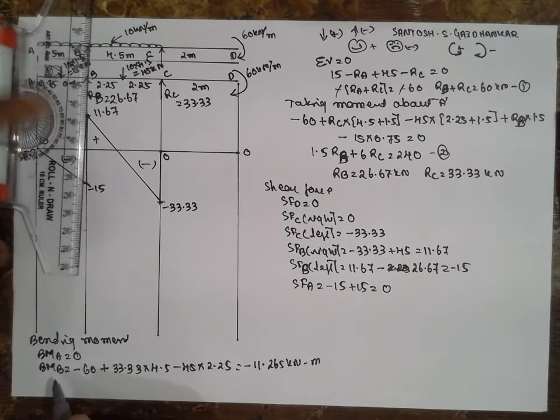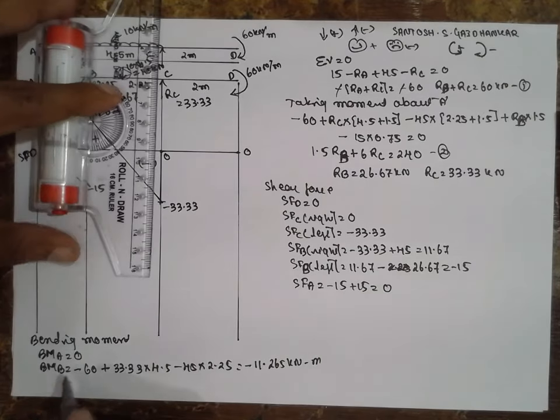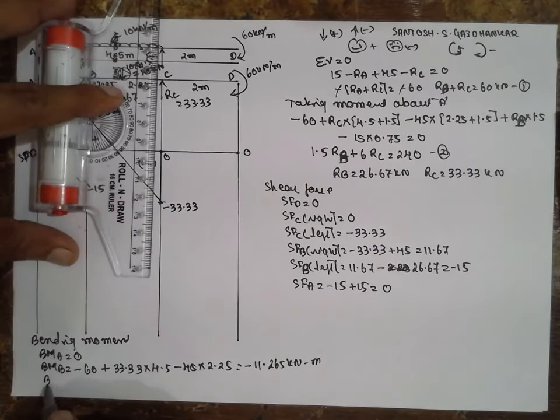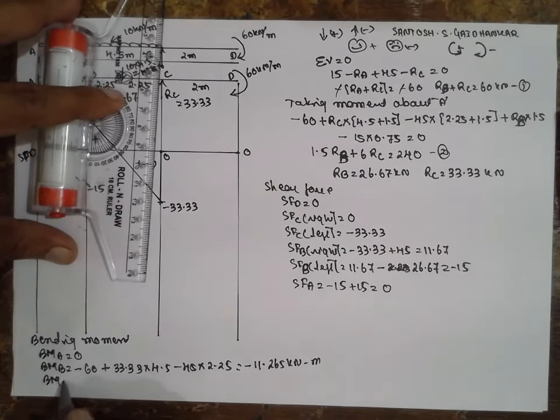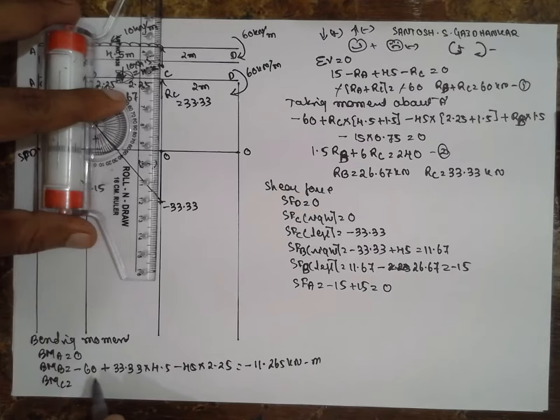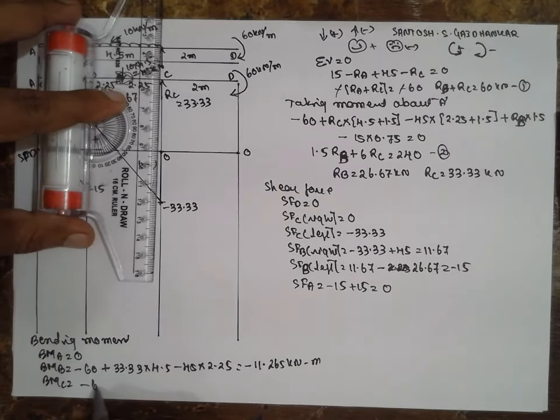Now bending moment at C: calculating, the bending moment at C gives minus 60 kNm.